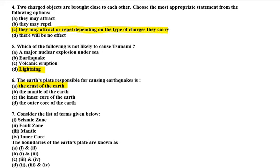Question number 7 is: consider the list of terms given below - seismic zone, fault zone, mantle, inner core. The boundaries of the earth's plates are known as... First is there. First wala hota hai seismic zone aur doosra kaun sa hai hamara? Fault zone. To in dono ki wajah se we get the boundaries of the earth plate, that is first and second.